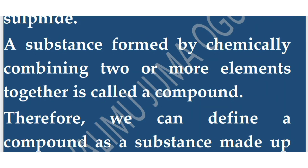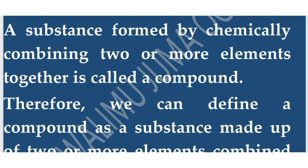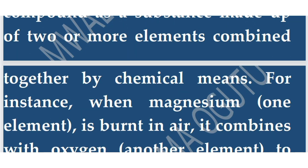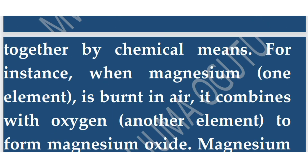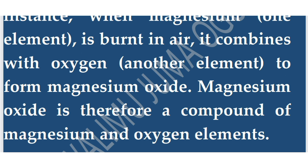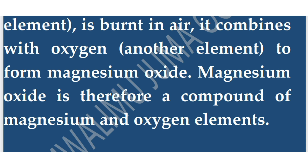A compound can be defined as a substance made up of two or more elements combined together by chemical means. For instance, when magnesium is burnt in air, it combines with oxygen to form magnesium oxide. Magnesium oxide is therefore a compound of magnesium and oxygen elements.